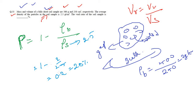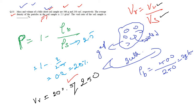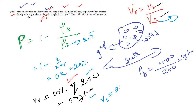Porosity means the volume occupied by void space. Porosity is 20 percent, so volume of voids = 20% of total volume = 20% of 250 = 50 cm³. Now, volume of solids = total volume − volume of voids = 250 − 50 = 200 cm³.